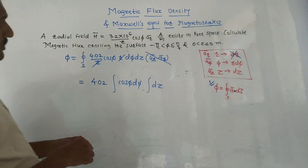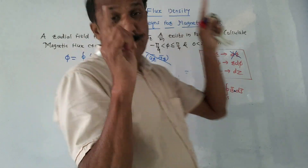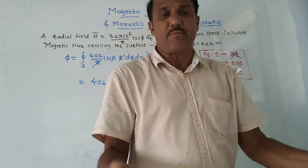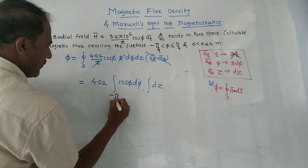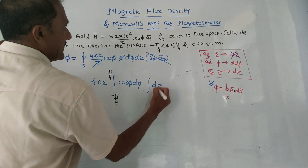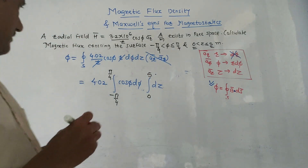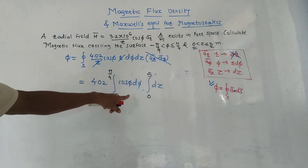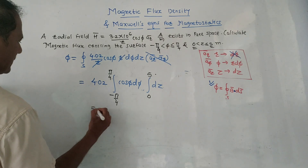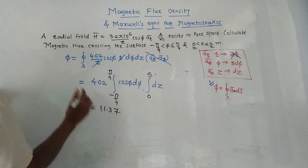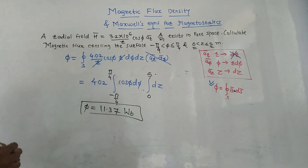Applying the limits: φ varies from −π/4 to +π/4, and z varies from 0 to 5. Note that the given limits are not the standard 0 to 2π but the specific limits as given. Since limits involve π, keep your calculator in radian mode. Solving this integration gives the answer: Φ equals 11.37 webers. This is the final answer for the magnetic flux crossing the given surface.